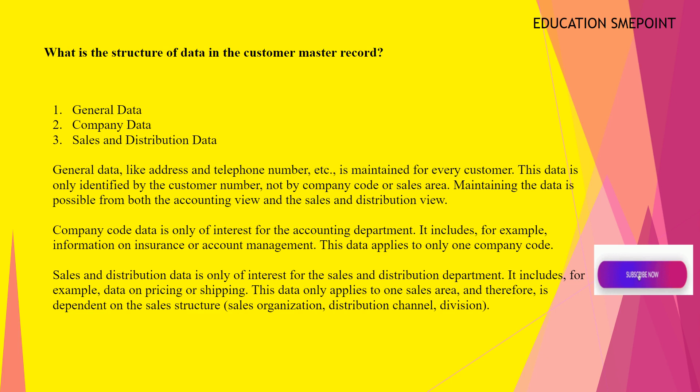Sales and distribution data is only of interest for the sales and distribution department. It includes, for example, data on pricing or shipping. This data only applies to one sales area, and therefore is dependent on the sales structure: sales organization, distribution channel, and division.